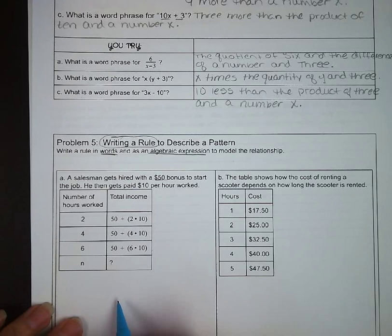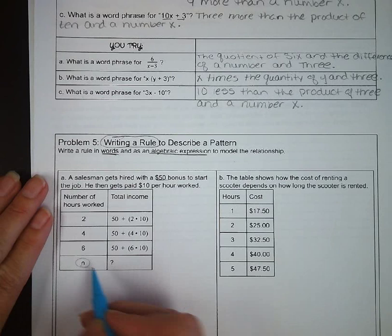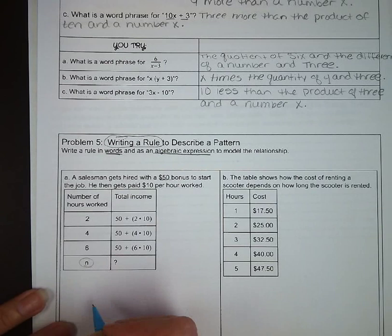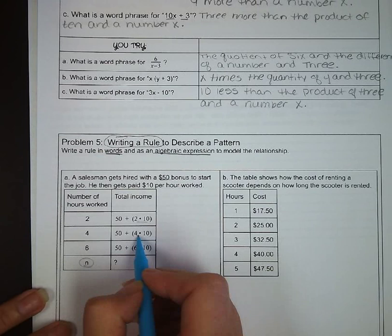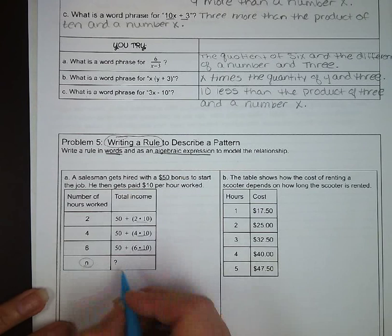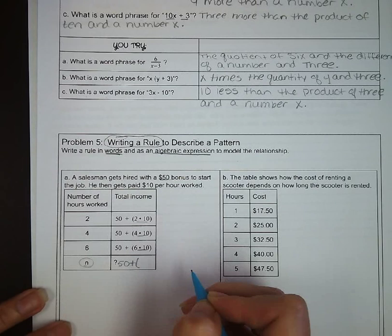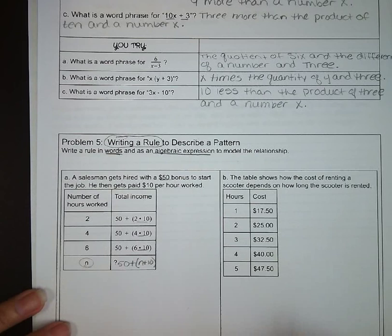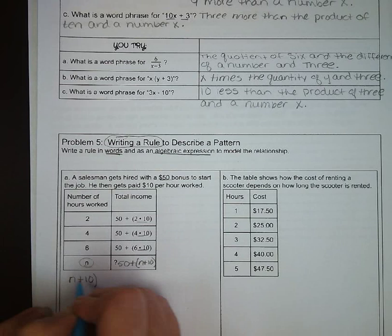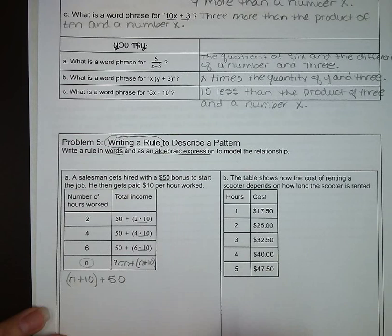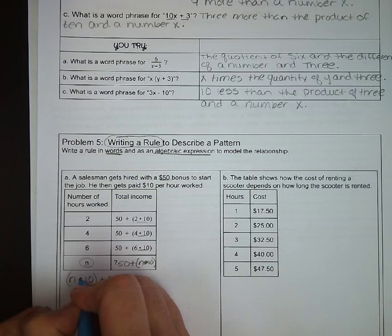So we just look to see where were our number of hours being worked, plugged into the equation. Looks like it's inside that parentheses and being multiplied by 10. So that's where we're going to plug in n. So we start with our $50 bonus, and we are adding the quantity of n, the number of hours worked, times 10. So we've got 50 plus 10 n.